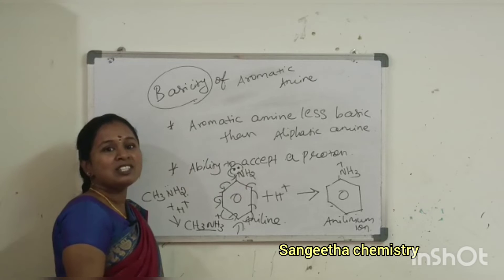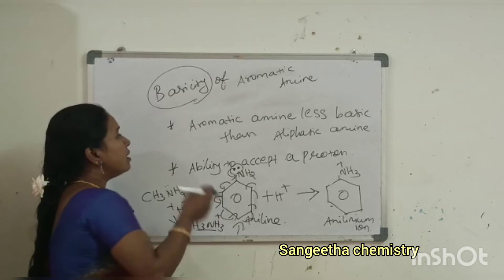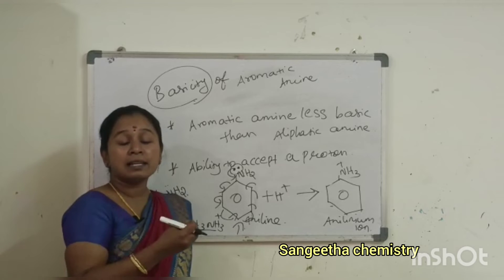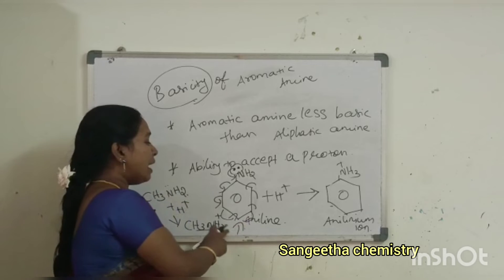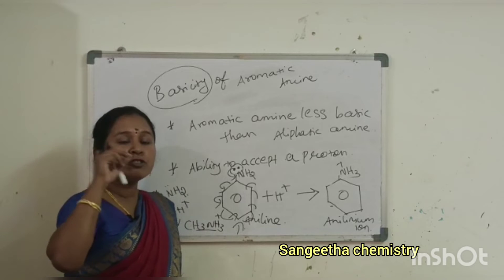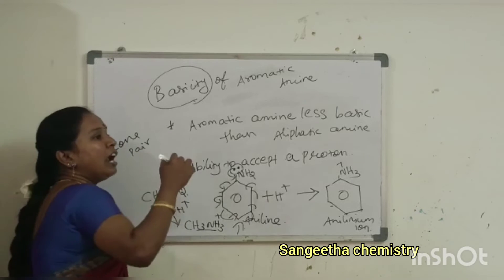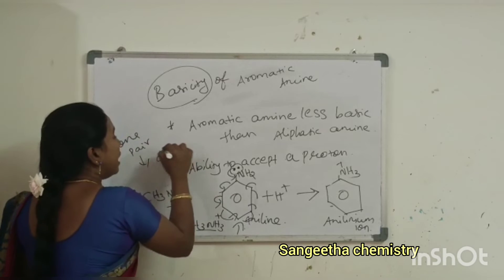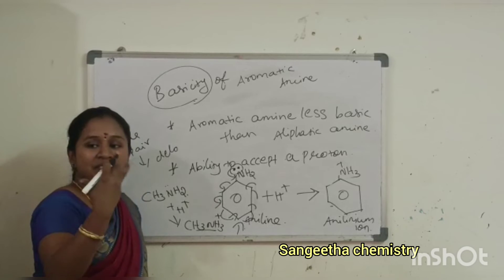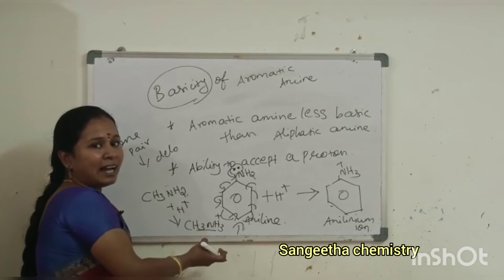So aromatic amines are less basic than aliphatic amines. Basicity is the ability to accept a proton. When aniline is treated with a proton, it forms an anilinium ion. The lone pair of electrons present in aniline undergoes delocalization — it doesn't have a free electron, so it is not able to easily accept a proton. That is why it is less basic when compared to aliphatic amines.